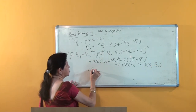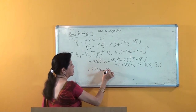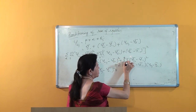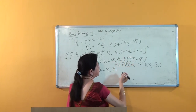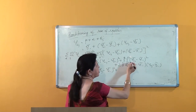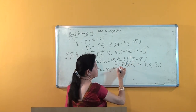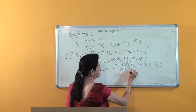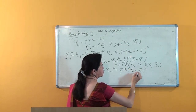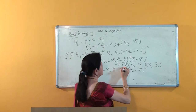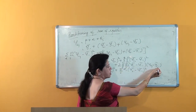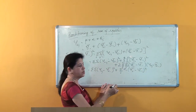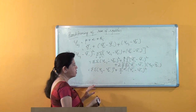This equals double summation of (y_ij minus y_i-dot bar) whole squared, for i equal to 1 to k and j equal to 1 to n_i. Since the term (y_i-dot bar minus y double-dot bar) is independent of j, the cross-product term simplifies to summation over i of n_i times (y_i-dot bar minus y double-dot bar) whole squared. The last cross-product term vanishes since the summation over j of (y_ij minus y_i-dot bar) equals zero, as the algebraic sum of deviations from the arithmetic mean is always zero.